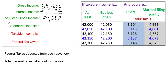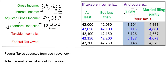The next item is called a standard deduction, which works in your favor — it decreases the amount of money you're responsible for paying taxes on. For single people, the standard deduction in 2019 was $12,200. If you are married filing jointly, it's doubled — $24,400 for 2019. Some people use an itemized deduction instead, but we won't cover that here. So we subtract $12,200 from $54,392 to get $42,192.